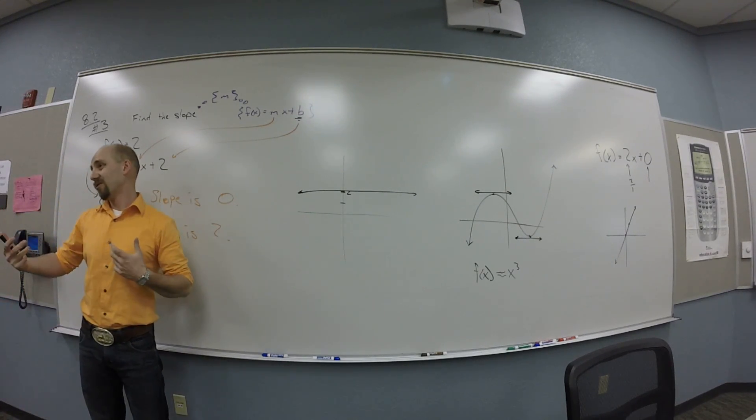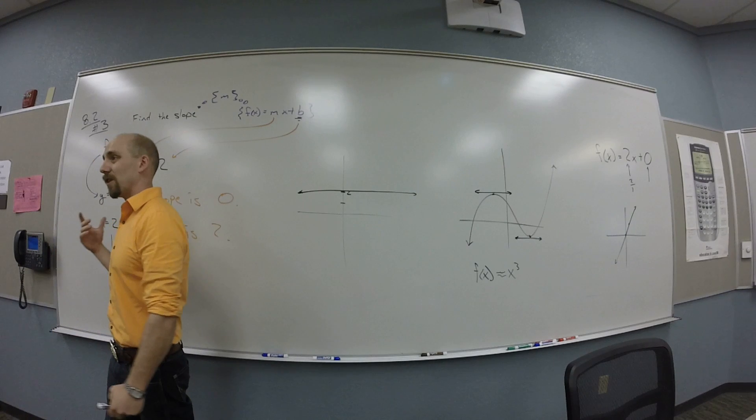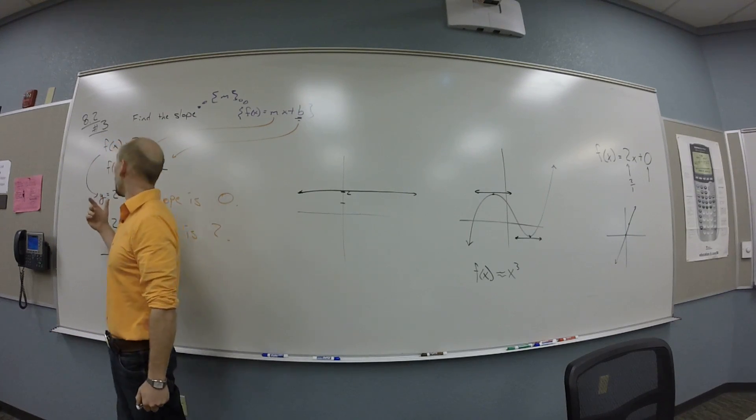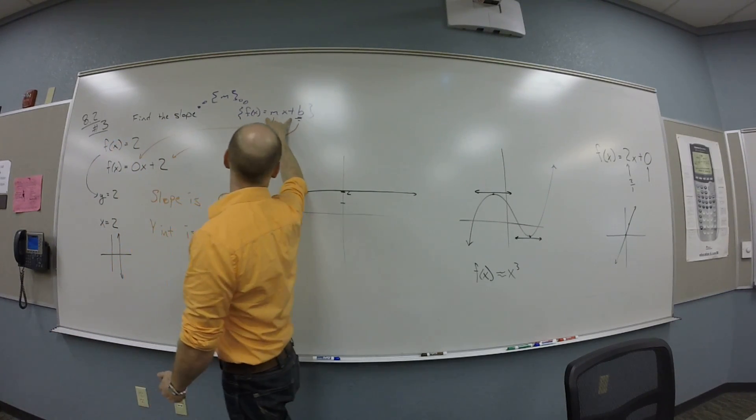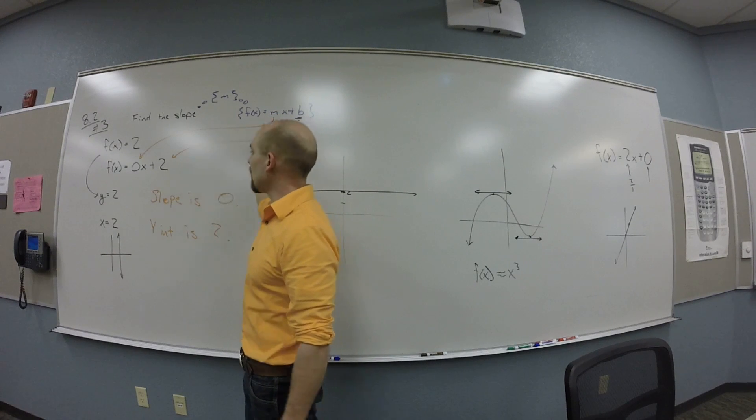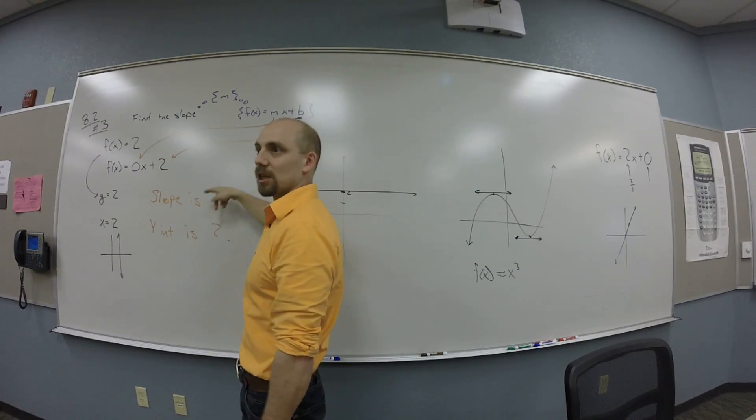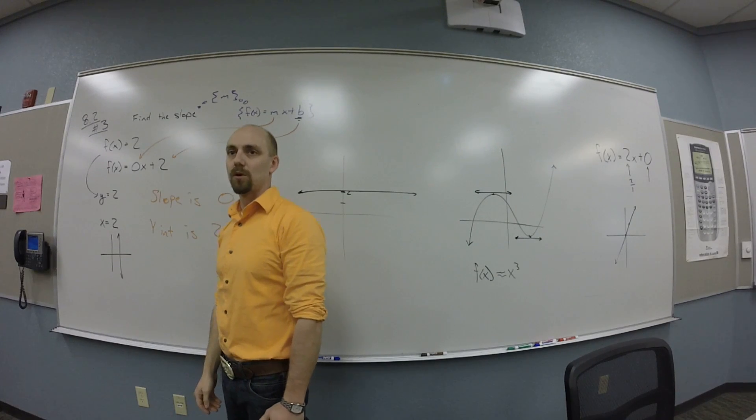So, when in doubt on lines, like you're trying to figure out the slope or the intercept or whatever, put it in this form, and then the stuff on the x is the slope, and the stuff that's left over is the b. Cool?